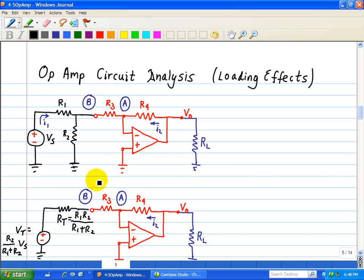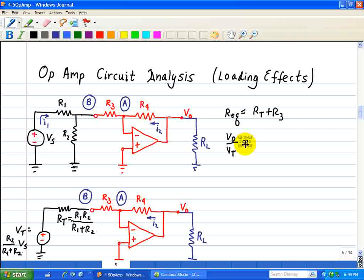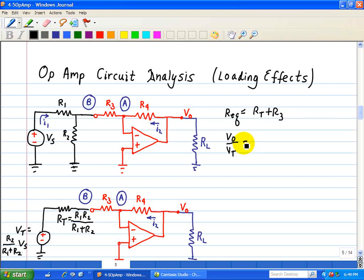Now this is an inverting gain, but we need to take into account Rt plus R3. So in other words, we'll replace R equivalent with Rt plus R3. Now we note the relationship between V0 and Vt is based on the inverting amplifier gain, which is the ratio of the feedback resistor, R4.